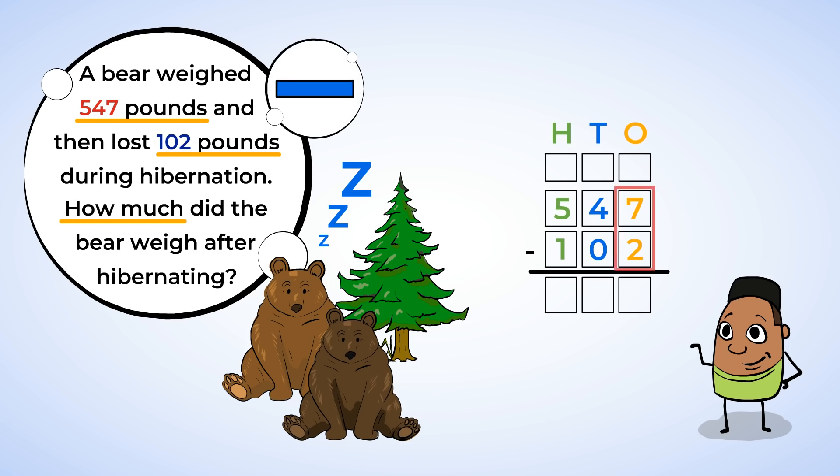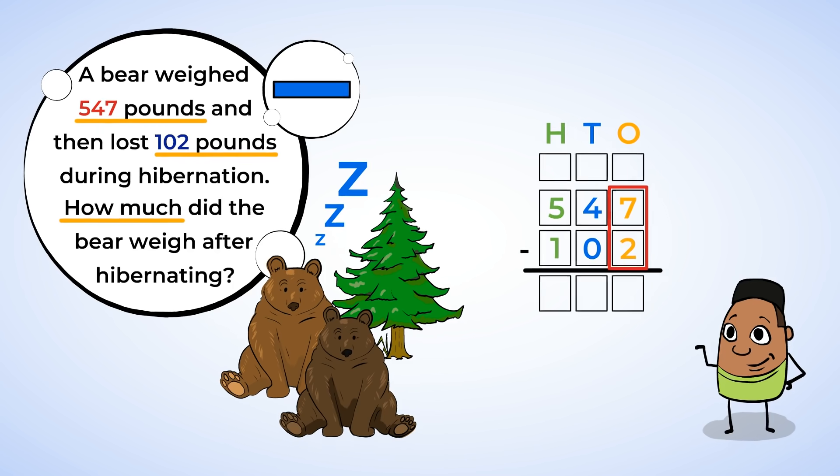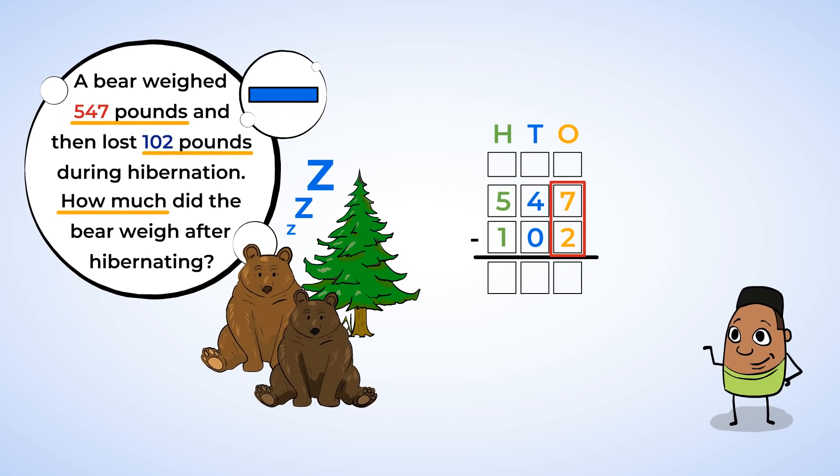So we can subtract 102 from 547, each place value aligned. You can see that the 7 and the 2 are aligned in the ones place. Just like when subtracting two-digit numbers, you always start with the ones place. Always, always, always. 7 minus 2 is 5. That's right.